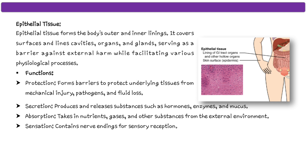Talking about the functions of epithelial tissue: the first function is protection — it forms a barrier to protect underlying tissues from mechanical injury, pathogens, fluid loss, etc. The second is secretion — this tissue produces and releases substances such as hormones, enzymes, and mucus. The third is absorption — it takes in nutrients, gases and other substances from the external environment. And the last is sensation — it contains nerve endings for sensory reception.